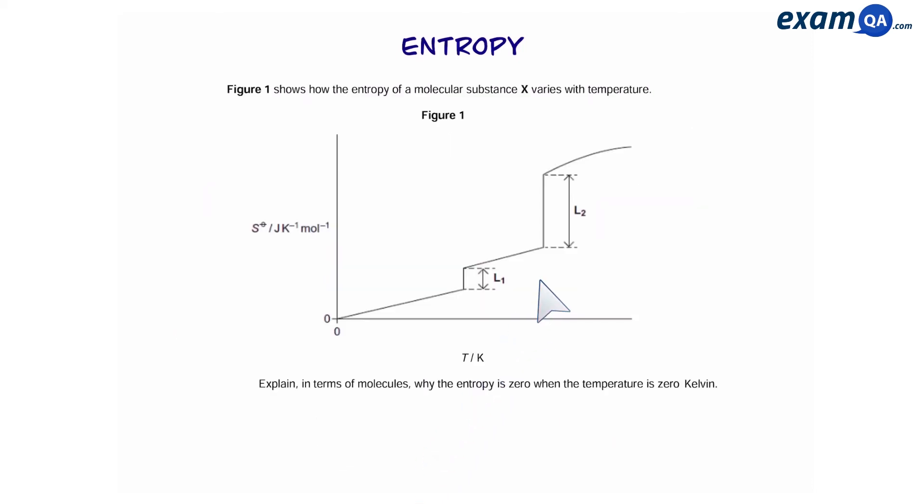So here we have a figure and the question says explain in terms of molecules why entropy is zero when the temperature is zero kelvin. Now zero kelvin is also known as absolute zero, which is the lowest temperature a substance can be at. So over here we have zero kelvin. That means the substance is going to be a solid. However, because there's no energy that means the particles will have literally no vibration. So that means there's going to be no randomness or no disorder. And since there's no disorder, that means there's no randomness and hence there's no entropy.